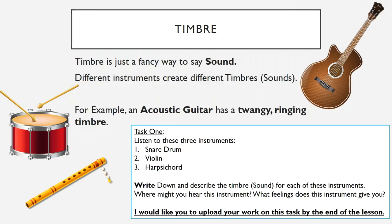So what is timbre? Timbre is just a fancy way of saying sound. When people say the timbre of something, they're pretty much saying how it sounds. Different timbres are created by different instruments, so different instruments create different sounds and different timbres. For example, an acoustic guitar has a twangy, ringing timbre.